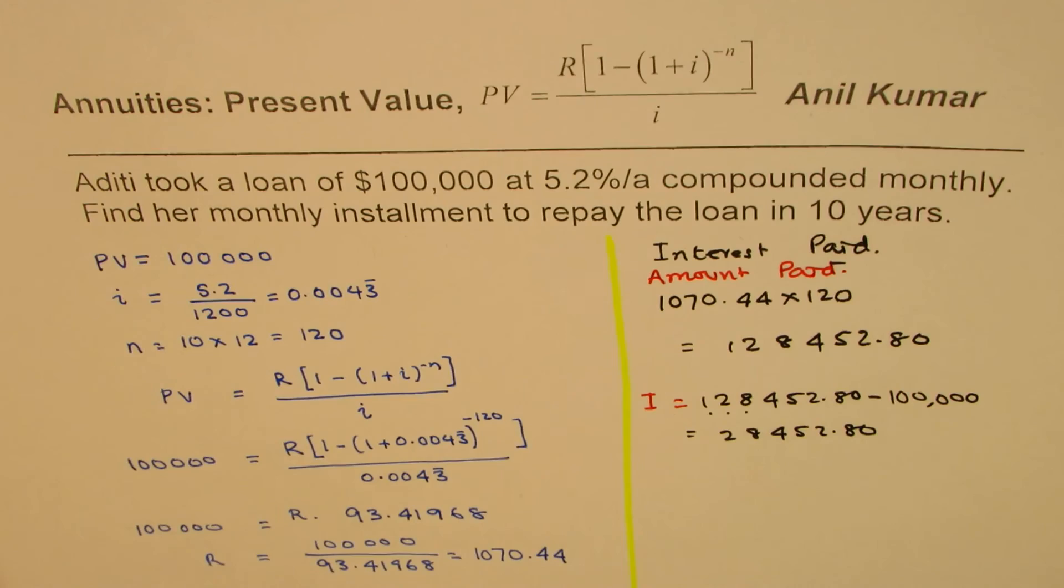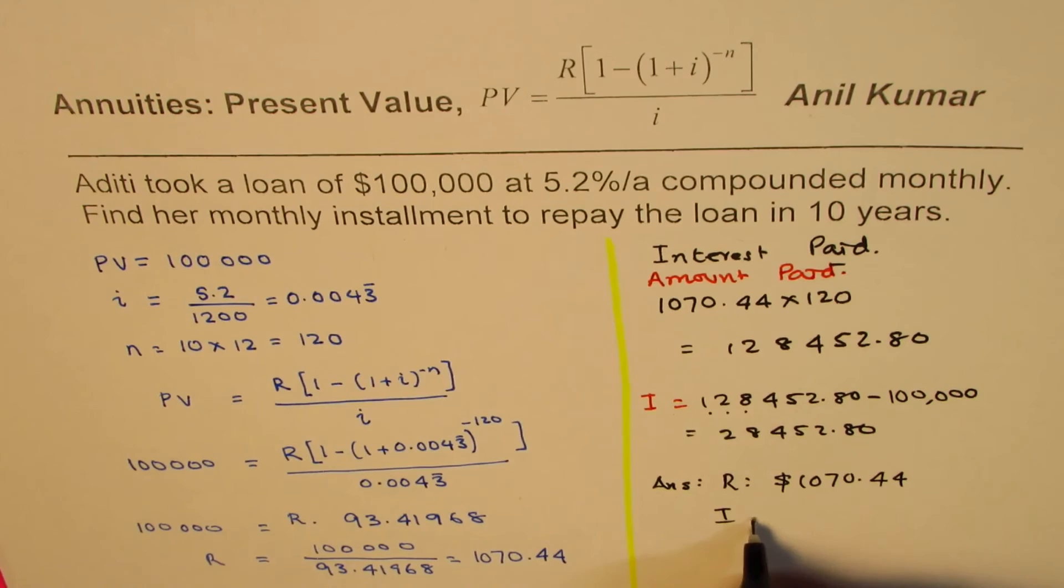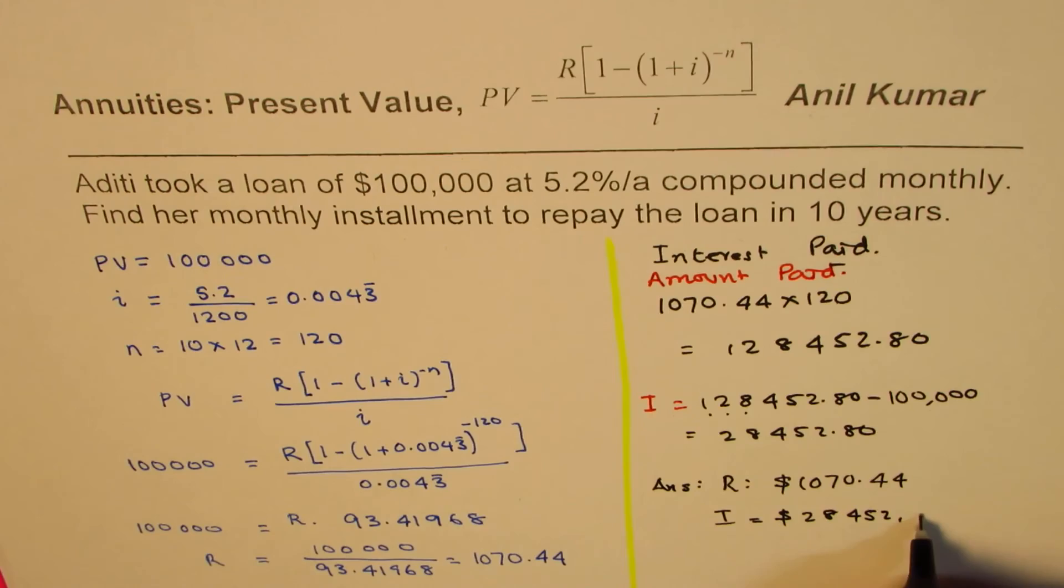You can write down your answer: the regular payment will be $1,070.44 and the interest will be $28,452.80. So we just extended this question to also calculate interest.